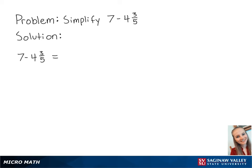For this problem, we're going to simplify 7 minus 4 and 3 fifths. First, we need to convert the mixed numbers into fractions with a common denominator.